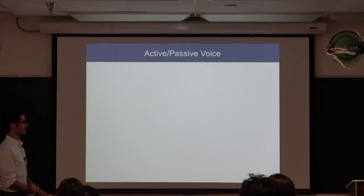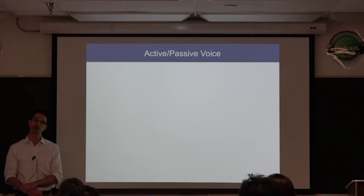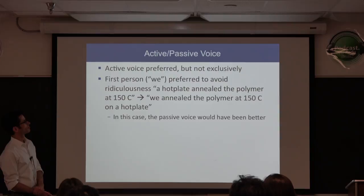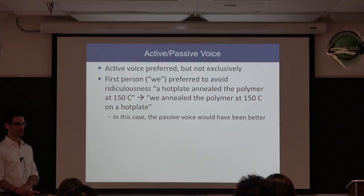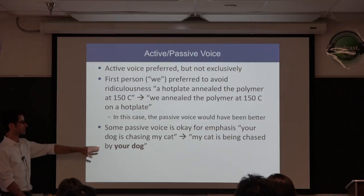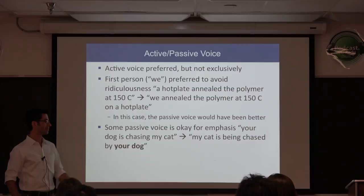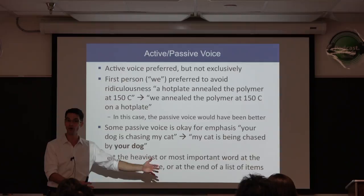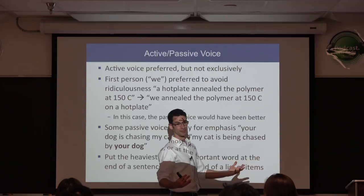Active and passive voice: there are passive voice police and active voice police. Active voice is preferred, but not exclusively. First person 'we' is okay to avoid ridiculousness. 'A hot plate annealed the polymer at 150°C' would be ridiculous. 'We annealed the polymer at 150°C on a hot plate' is fine. Sometimes passive voice is okay for emphasis: 'your dog is chasing my cat' has a lot less power than 'my cat is being chased by your dog,' because it allows us to put the most important item at the end of a sentence.